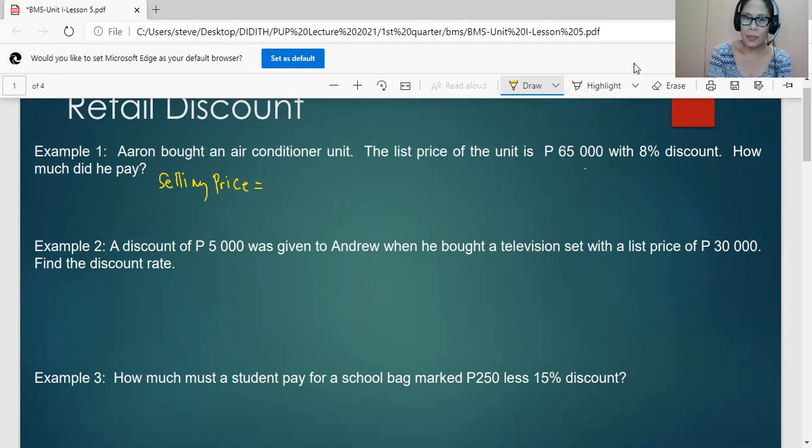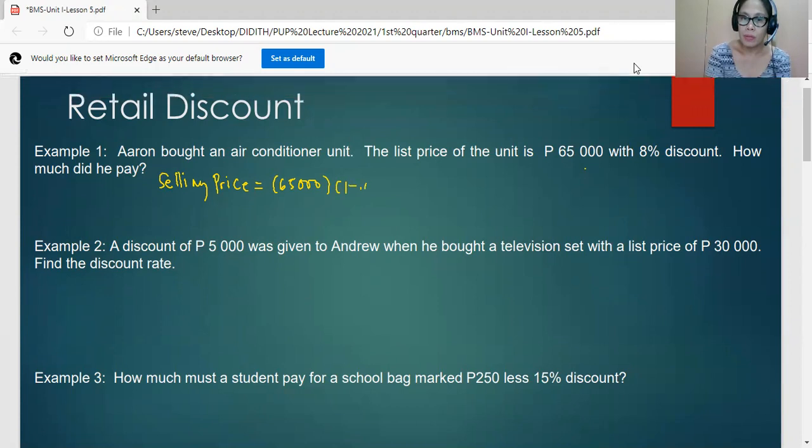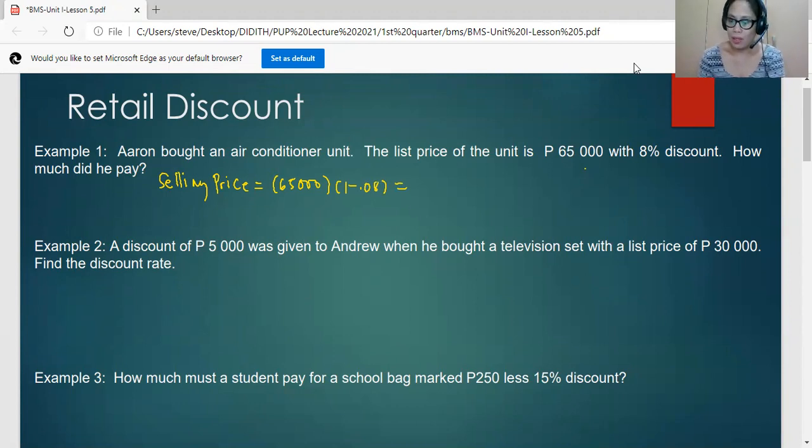To obtain the selling price, we will simply multiply the list price 65,000 pesos by the complement of the discount rate. When we say complement, we will subtract the discount rate from 1. Using your calculator, you can work on the selling price. That's 65,000 times (1 - 0.08), so we get 59,800.